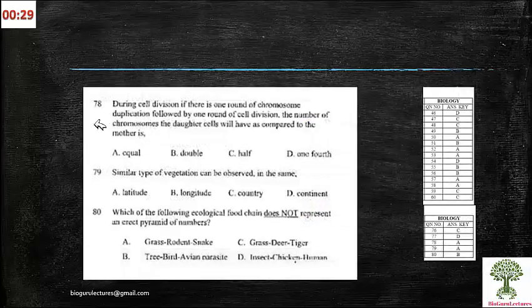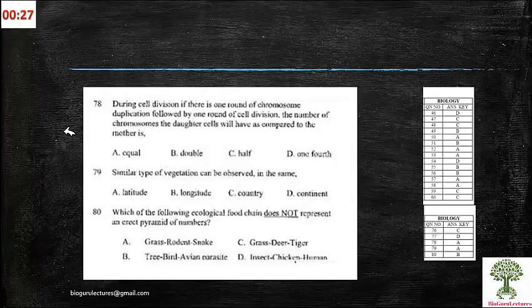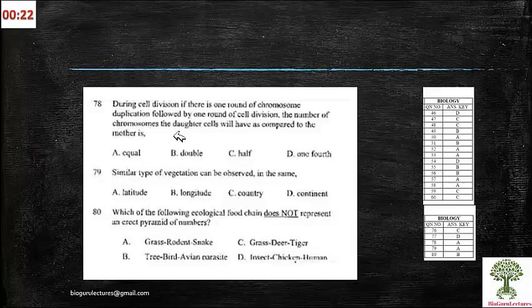Next is 78, during cell division there is one round of chromosome duplication followed by one round of cell division, the number of chromosomes in daughter cells will be as compared to the mother. The answer is equal, because it is describing only mitosis, obviously they won't be changed at all.